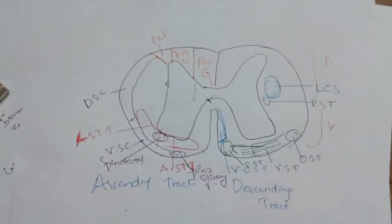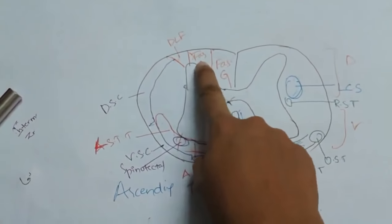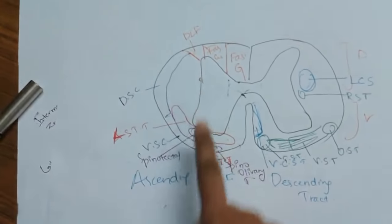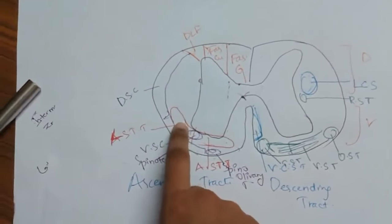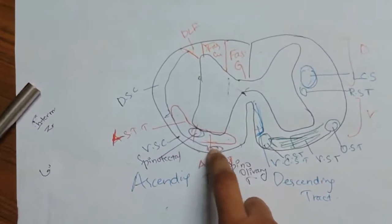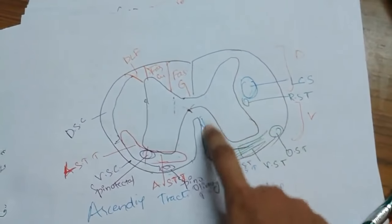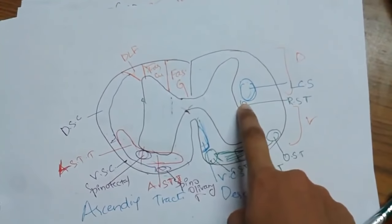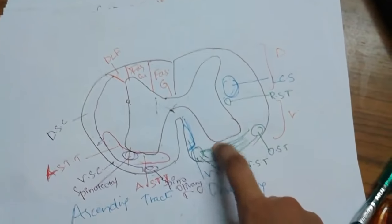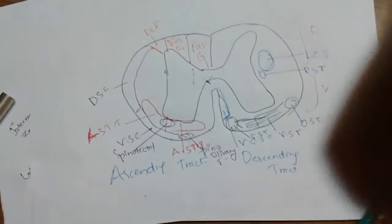To summarize: the ascending tracts are fasciculus gracilis, fasciculus cuneatus, dorsolateral fasciculus, dorsal and ventral spinocerebellar tracts, lateral and anterior spinothalamic tracts, spinotectal tract, and spinoolivary tract. The descending tracts are lateral corticospinal tract, ventral corticospinal tract, rubrospinal tract, olivospinal tract, vestibulospinal tract, and tectospinal tract. All these are present in the cross section of the spinal cord.